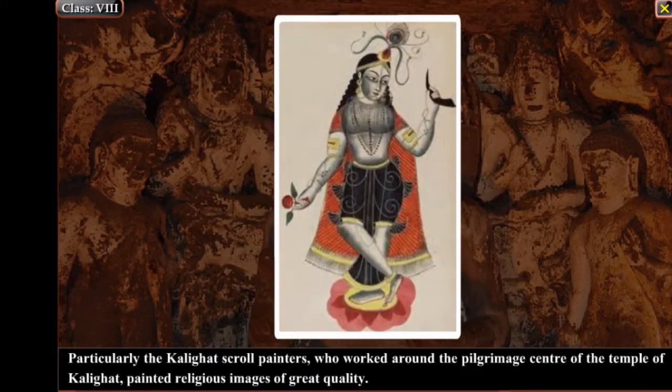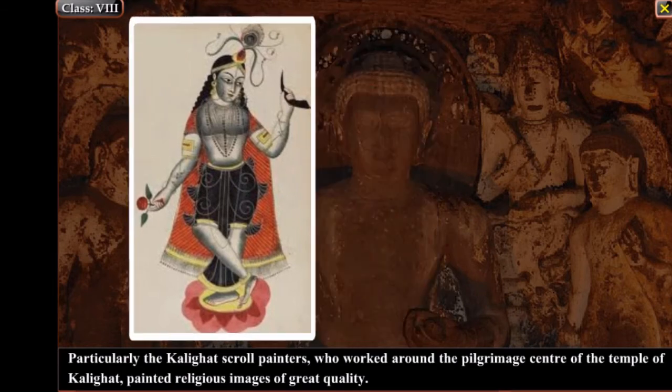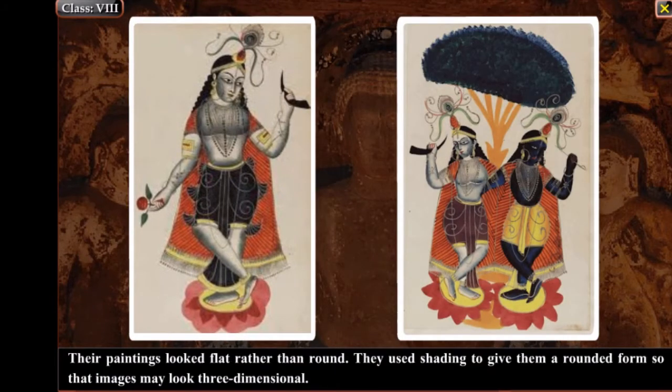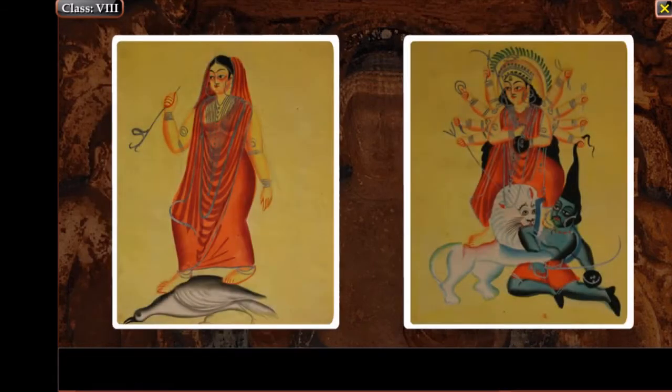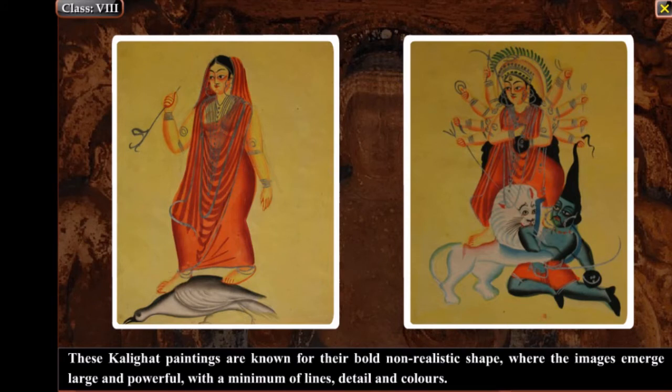Particularly the Kalighat scroll painters, who worked around the pilgrimage centre of the Temple of Kalighat, painted religious images of great quality. These paintings looked flat rather than round, and they used shading to give them a rounded form so that images may look three-dimensional. These Kalighat paintings are known for their bold, non-realistic shape, where the images emerge large and powerful, with a minimum of lines, detail and colours.